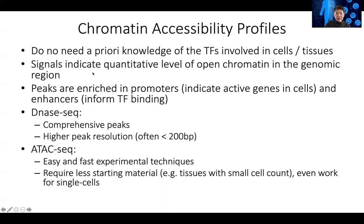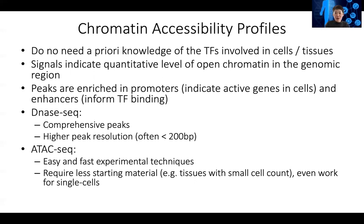The chromatin accessibility signal peaks tell us whether transcription factor binding is important. The TF binding strength doesn't matter as much, but whether the histone mark or chromatin accessibility shows 10-fold or 50-fold enrichment tells us there is a stronger effect. In both DNase-seq and ATAC-seq, peaks are enriched at promoters, indicating potentially active genes, and at enhancers, which informs us about relevant transcription factor binding.